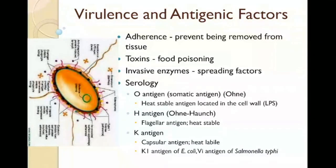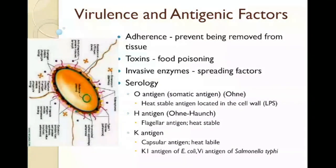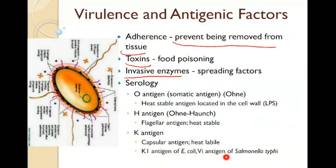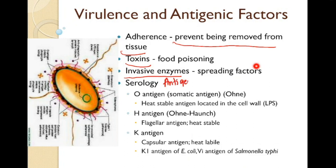Let's talk about the virulence and antigenic factors. One virulence factor is adherence — because of the presence of adherence factors, organisms are prevented from being removed from tissues. Some of them produce toxins, thereby causing food poisoning. Some produce invasive enzymes that serve as spreading factors.